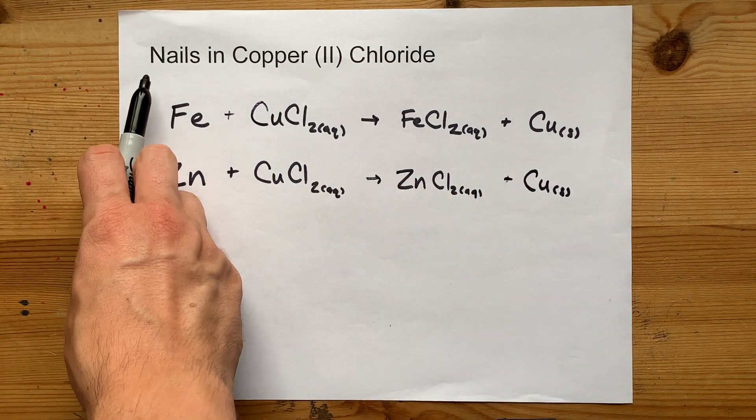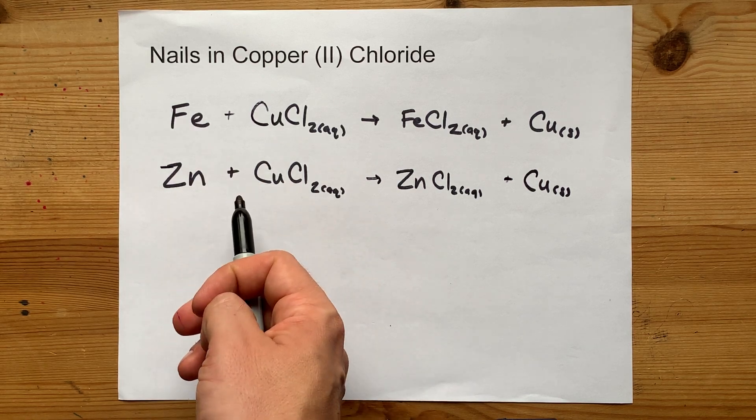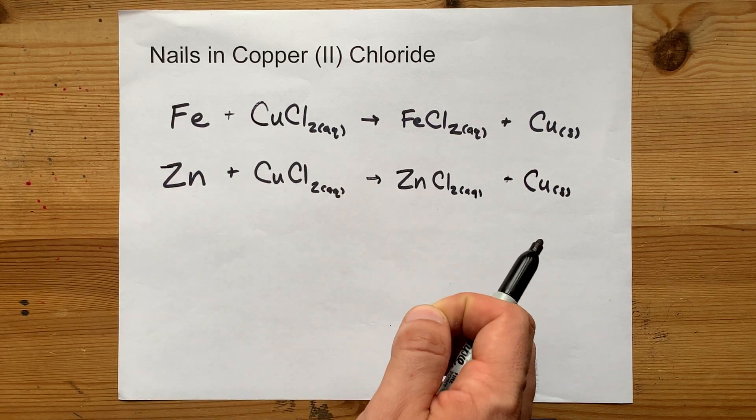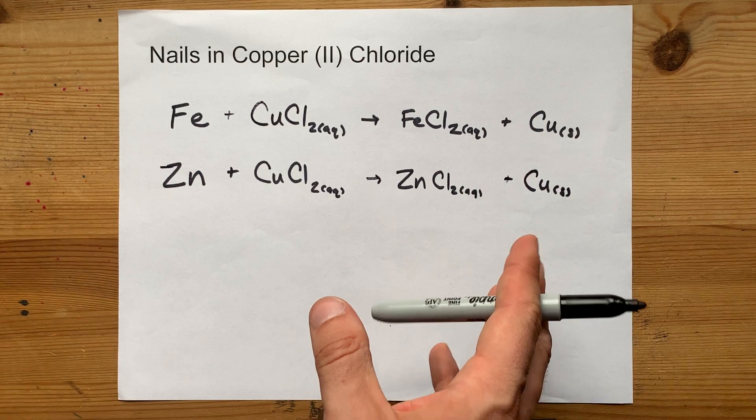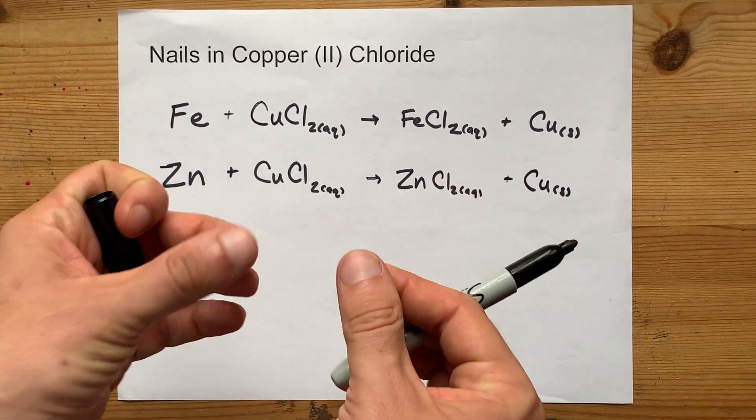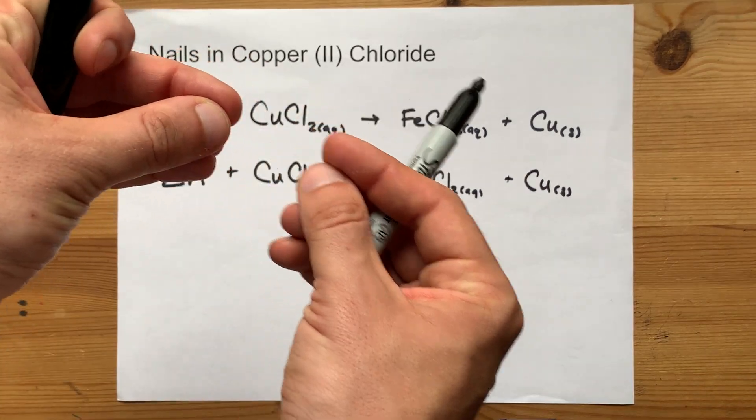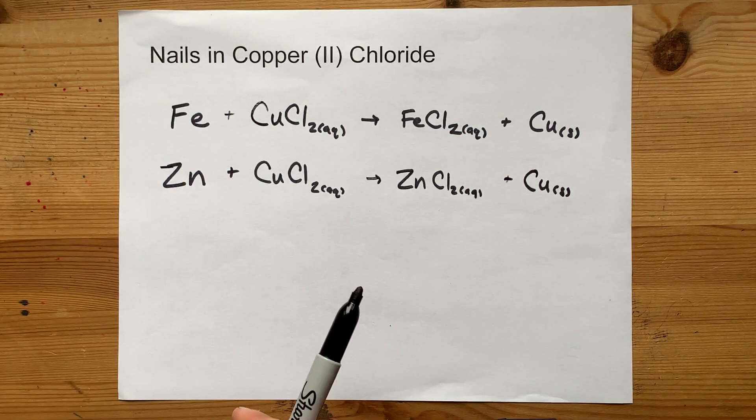So the answer is, when you put a nail in copper-2-chloride, if it's made of iron or zinc, you're going to get a chemical reaction. The outside of the nail is going to become a little more copper-colored. It's actually going to be flakes of copper in my experience. You can just shave them off and then you have some solid copper in your hands.